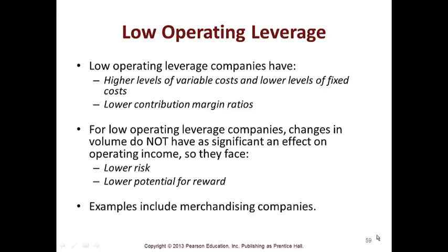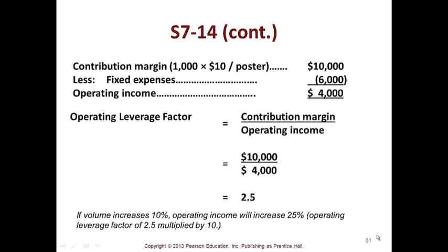S7-14 shows you the contribution margin and fixed expenses, giving you the operating income. Your contribution margin divided by your operating income is 2.5. So if volume increased 10%, operating income will increase 25% — that's how you read this: 2.5 is a factor multiplied by 10. These are the terms managers like to work in; they don't want to see the number crunching, they want this kind of language.